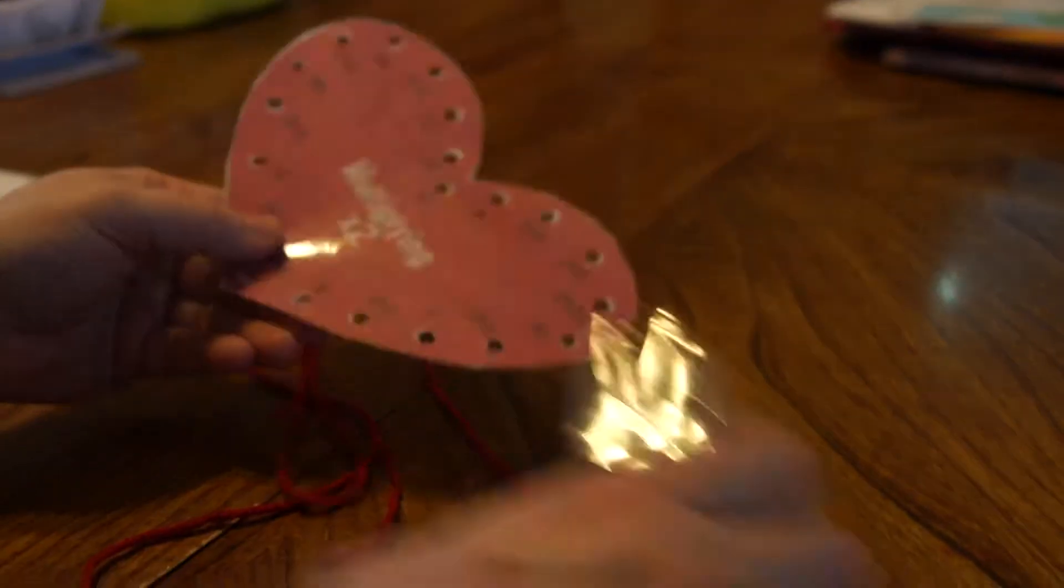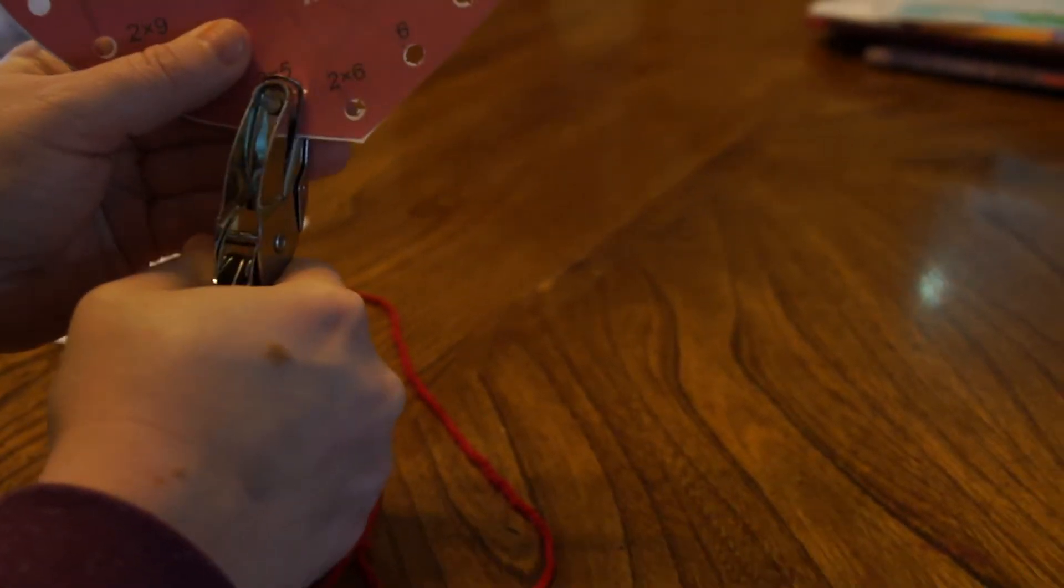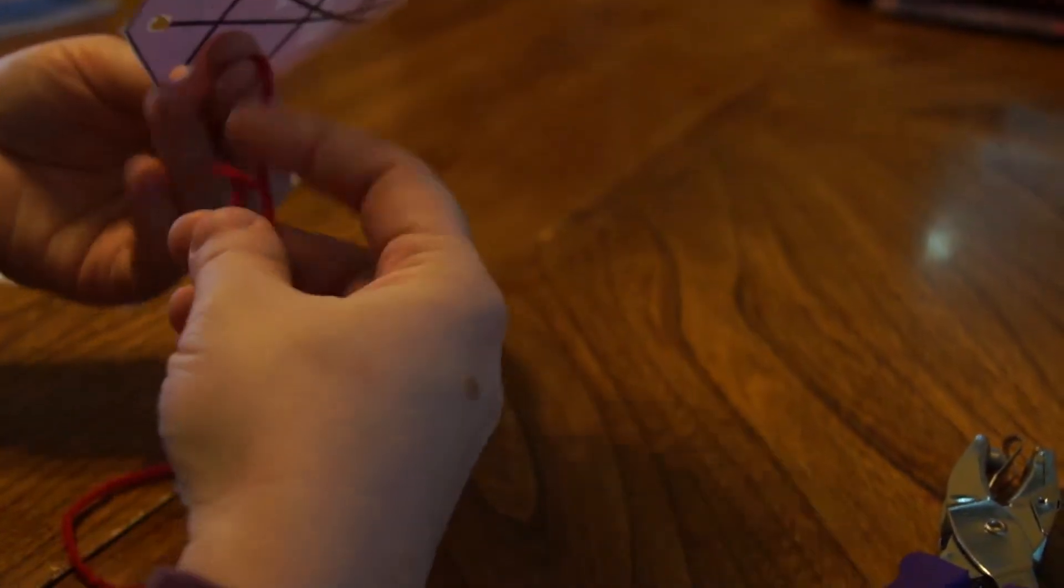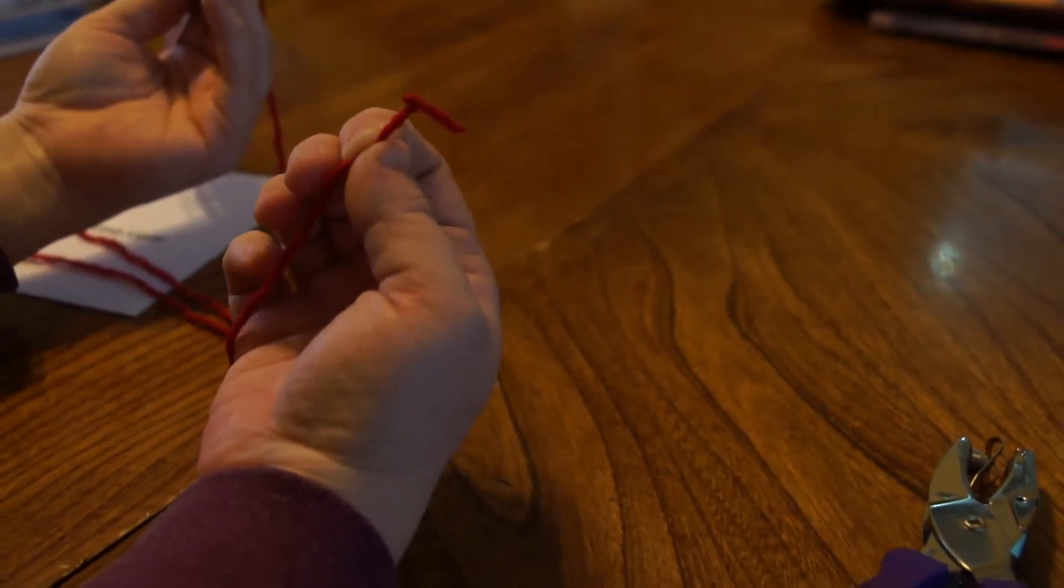So then what you're going to do after you cut it out, then you go through all these little spots here and you're just going to hole punch them to give you your holes so we have them all around. Then you need a piece of yarn, probably about 18 inches to 2 feet, something like that. And you tie a knot on one end.